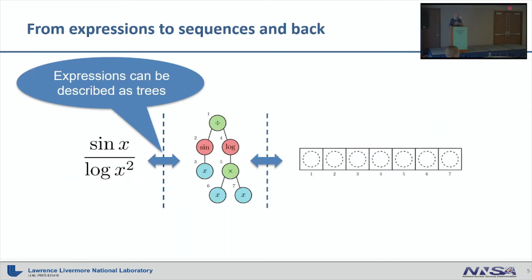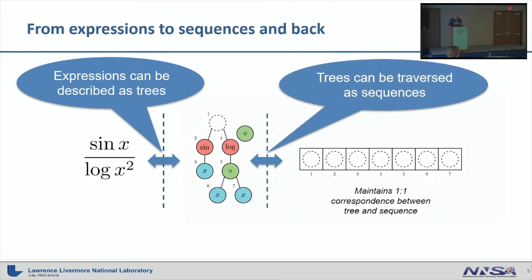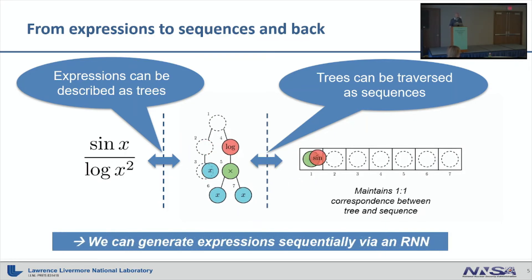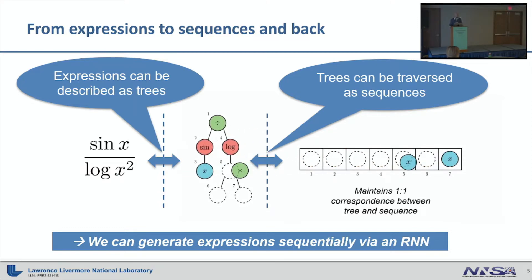Before describing the framework, it's important to understand that we can describe mathematical expressions as binary trees, where nodes represent mathematical operators and leaves are variables or constants. On the other hand, we can also represent these trees as a sequence and maintain a one-to-one correspondence between the trees, the expression, and the sequence. The important takeaway is that we can build sequential representations of any mathematical expression and use autoregressive sampling to generate new expressions.